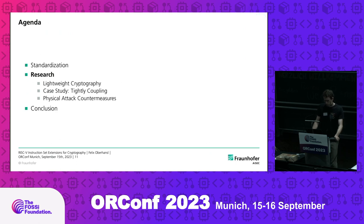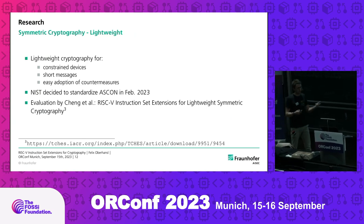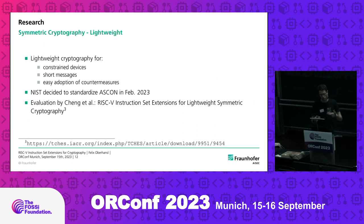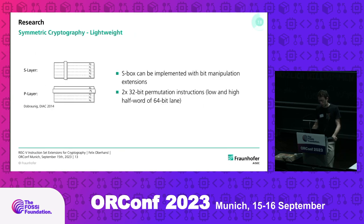Now I want to talk about some things that might make it into the standard someday — or might not, but are still interesting. I want to start with lightweight cryptography. As the name says, it's meant for constrained devices, short messages, and the easy adoption of countermeasures, as these devices are usually quite accessible — basically everything Internet of Things. There was a standardization procedure that ended just this year in February, and as a winner, the Ascon algorithm emerged. There was actually a very similar evaluation done for this algorithm on how we can integrate it.